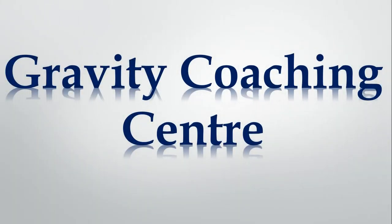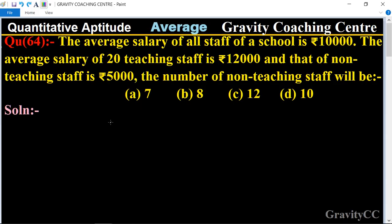Welcome to our channel, Gravity Coaching Centre. Quantitative Aptitude, chapter Average, question number 64. The average salary of all staff of a school is rupees 10,000, and the average salary of 20 teaching staff is rupees 12,000